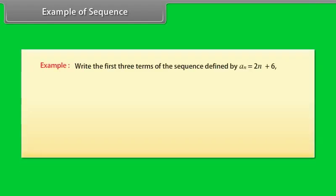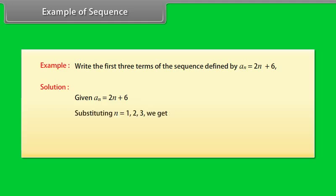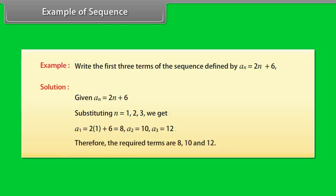Example: Write the first three terms of the sequence defined by a(n) = 2n + 6. Solution: Given a(n) = 2n + 6. Substituting n = 1, 2, 3, we get: a(1) = 2×1 + 6 = 8, a(2) = 10, a(3) = 12. Therefore, the required terms are 8, 10, and 12.